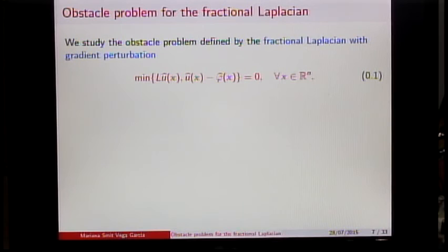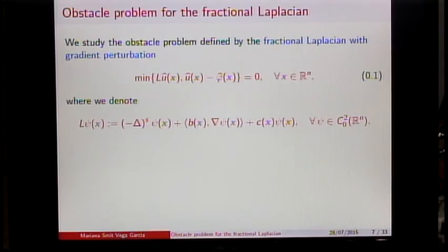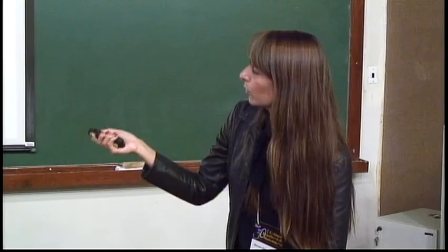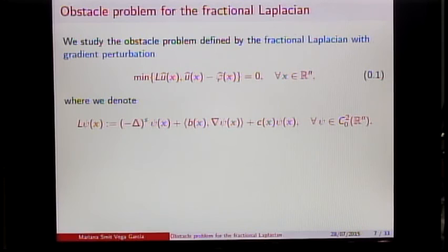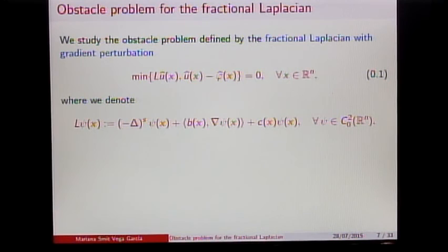Let me tell you about the obstacle problem for the fractional Laplacian, which is a bit more technical but the ideas are the same. We consider a function u-hat which satisfies that the minimum between an operator L and u-hat minus phi-hat is zero. Here the operator L denotes the fractional Laplacian plus a drift term — a gradient perturbation. Since this minimum must be zero, u-hat must be greater or equal than phi-hat, the operator must be greater or equal than zero, and if u-hat is strictly greater than phi-hat, the operator must vanish.